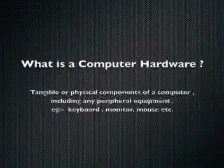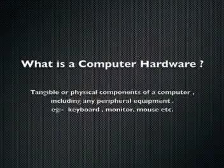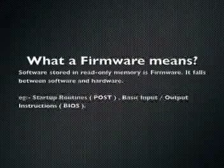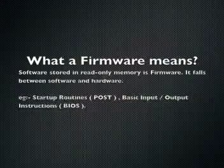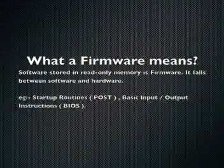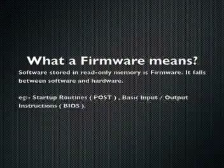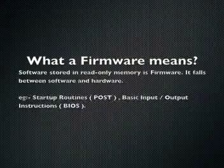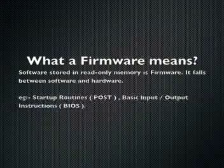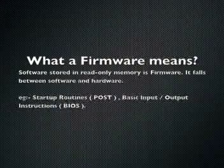What is computer hardware? Hardware refers to the tangible or physical parts of a computer, like the keyboard, monitor, and mouse. What does firmware mean? Firmware is software stored in read-only memory. It falls between software and hardware.